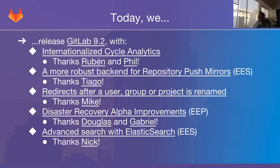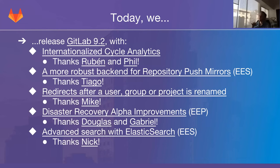Second, we have a more robust backend for repository push mirrors. In Enterprise Edition we have repository mirroring in two flavors: push mirrors, where every push into GitLab automatically updates a mirror repo on another machine, and pull mirrors, where GitLab auto-updates from a remote repo like GitHub or Bitbucket. With 9.2 we bring a more robust backend so the instance isn't under heavy stress every hour when repositories update. Thanks Tiago for working on that.